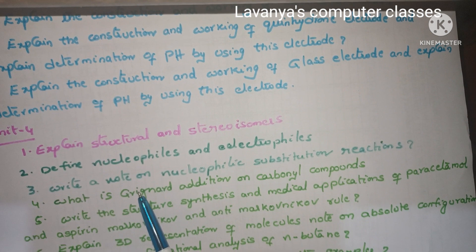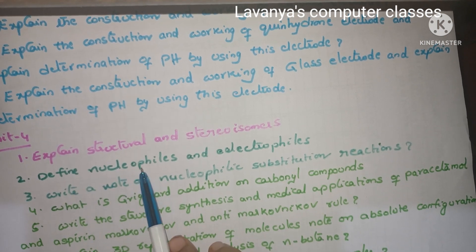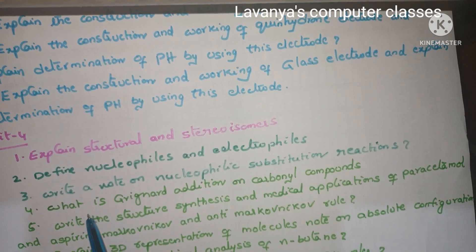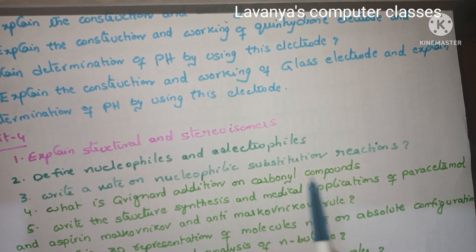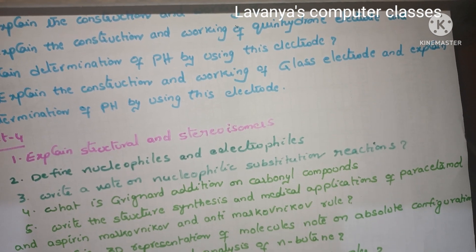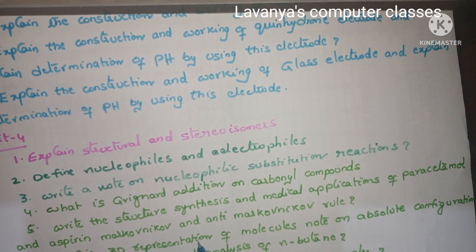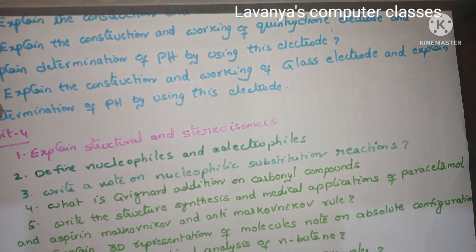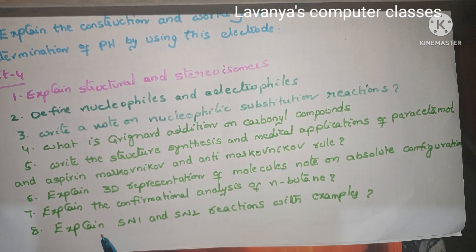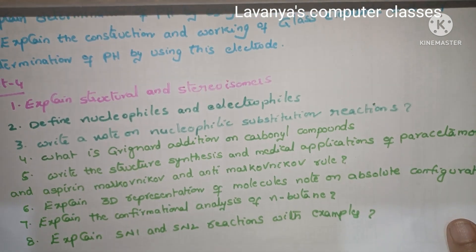Unit 4 questions: explain structural and stereoisomers. Define nucleophiles and electrophiles. Write a note on nucleophilic substitution reactions. What is Grignard addition on carbonyl compounds? Write the structure, synthesis, and medical applications of paracetamol and aspirin. Markovnikov and anti-Markovnikov rule. Explain 3D representation of molecules and absolute configuration. Explain the conformational analysis of n-butane. Explain SN1 and SN2 reactions with examples. These are the important questions in Unit 4.